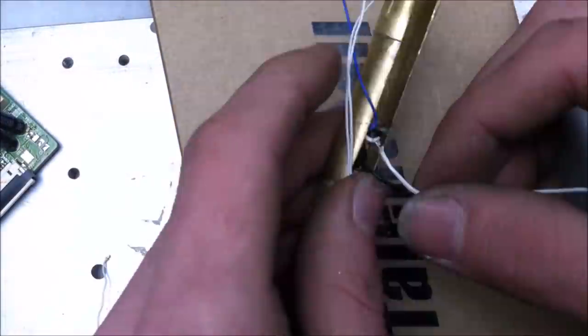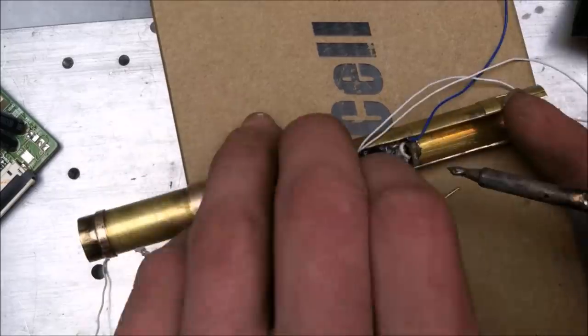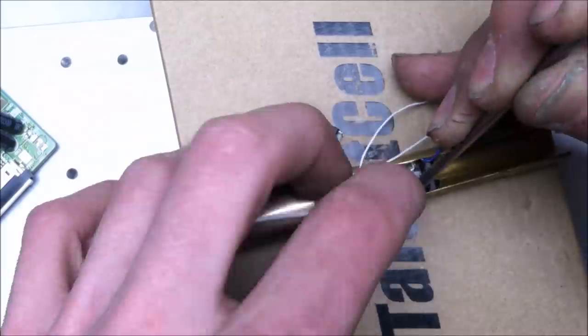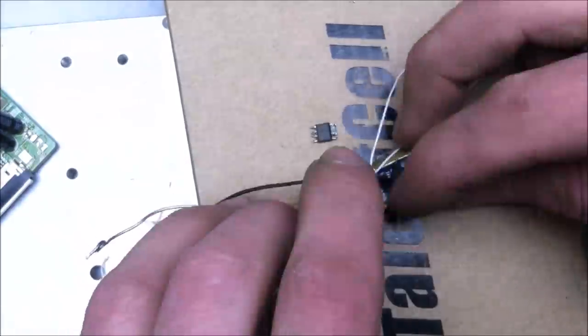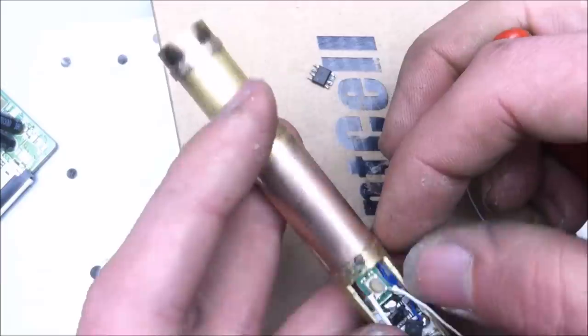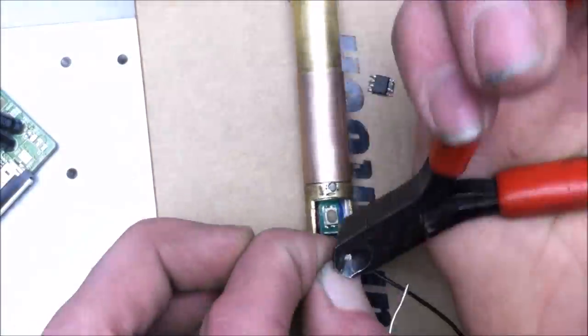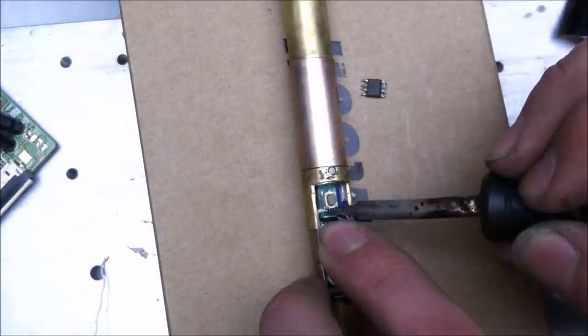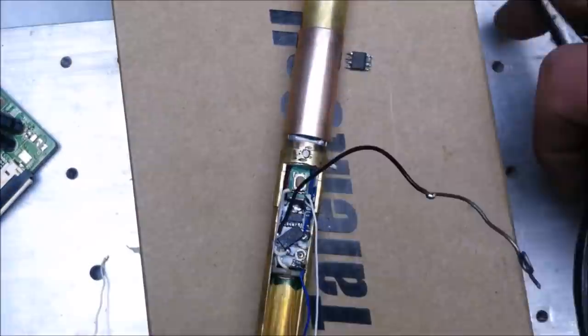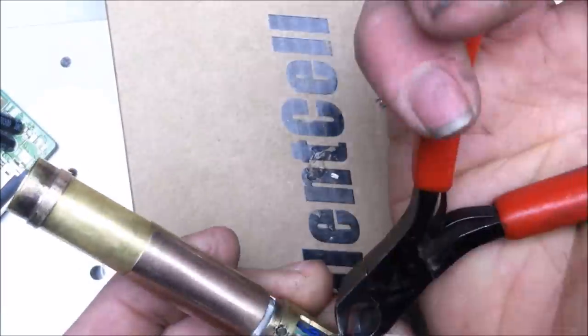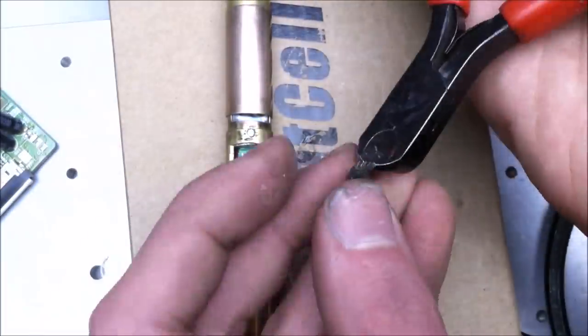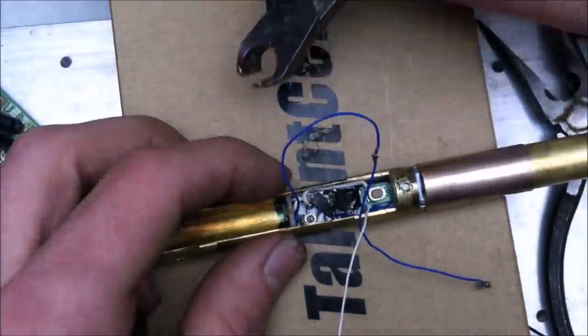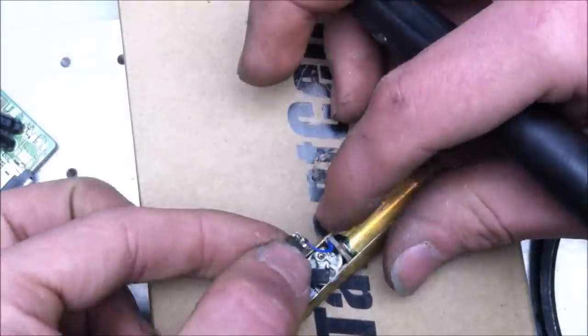The MOSFET's source will connect to the battery's negative, its drain will connect to the laser driver's negative input, and the gate will be connected to one side of the push button switch. The last connection to be made is from the other side of the switch to the battery's positive connection, providing the MOSFET's gate with a positive turn on signal.